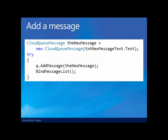Once we have a queue, we're going to want to put messages in that queue and get messages out of that queue. The first thing we need to do is create an actual message — a cloud queue message. A cloud queue message can hold either text or a byte array. In this case, it's got some simple text. To take that message and put it into the queue, or what we call adding the message to the queue, we simply call the queue and add our message.